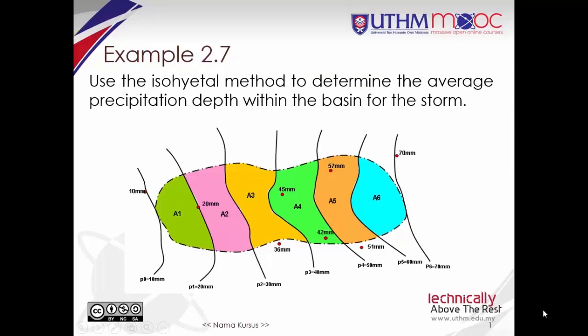Example 2.7: Use the isohyetal method to determine the average precipitation depth within the basin for the storm. First, determine what contours of equal precipitation or isohyets to use. This varies from situation to situation, but you want to have as many contours as necessary for an accurate model, but not so many that construction becomes cluttered. In this example, the following isohyets are used: 10, 20, 30, 40, 50, 60, and 70.